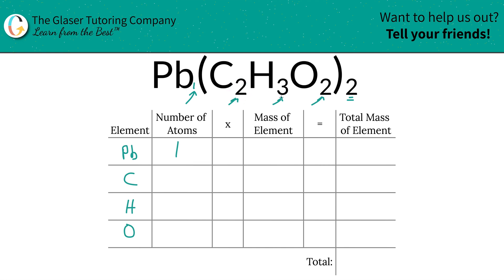Now, carbon, there are two carbons here, but there is also an outer subscript to this entire polyatomic anion called the acetate ion. In order to find the total carbon, we take the inner subscript and multiply it by that outer subscript. So that'd be four carbons. Then hydrogen, same thing. Take the inner, multiply it by the outer, so that's six. And then oxygen is four.